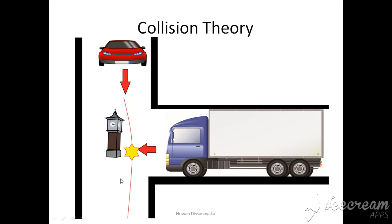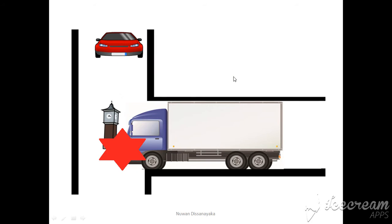Let's take an example: assume a car is traveling on the road and it meets with an accident with a truck coming from a side road. To cause fatal injuries to the person driving the car, the first condition is obvious — the car and truck must collide with each other. If the truck collides with a clock tower instead, nothing happens to the car driver.